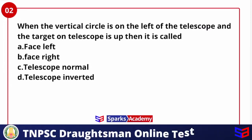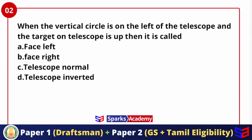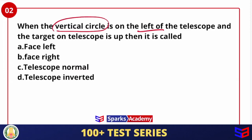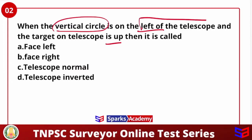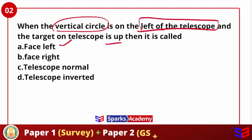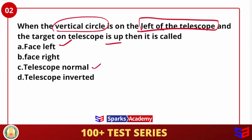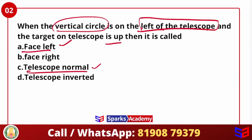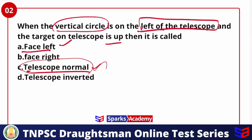Second question: 'When the vertical circle is on the left of the telescope and the target on the telescope is up, then it is called.' Let's look at the positions of the telescope: Face Left, Face Right, Telescopic Normal, and Telescopic Inverted. If we have the vertical circle on the left, we can narrow our answers to Face Left and Telescopic Normal. Face Right means the vertical circle is on the right. If the telescope is inverted, the vertical circle is also on the right.